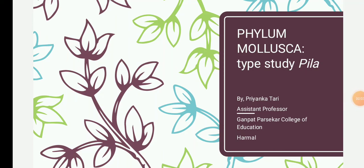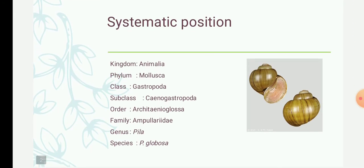In today's lecture we are going to study about Pila globosa, the type study under the phylum Mollusca. The systematic position: Pila globosa is classified under kingdom Animalia, phylum Mollusca, class Gastropoda. Under class Gastropoda it is further divided into subclass Caenogastropoda, order Architaenioglossa, family Ampullariidae, and genus Pila, species globosa.